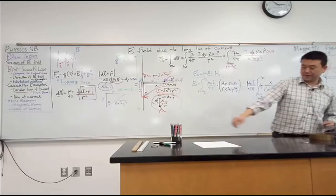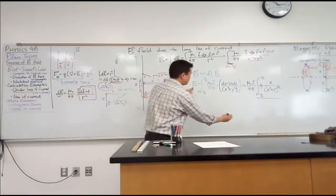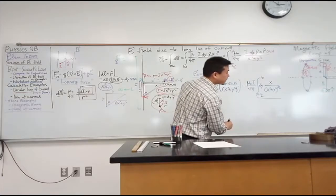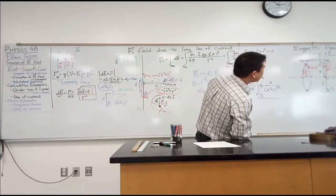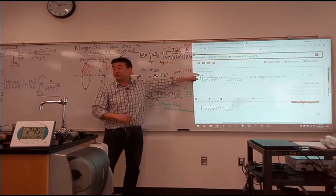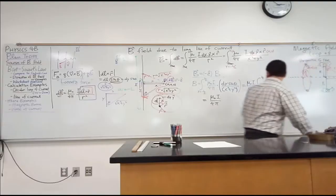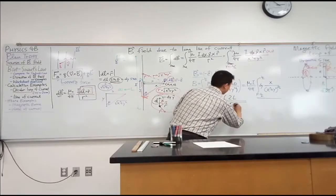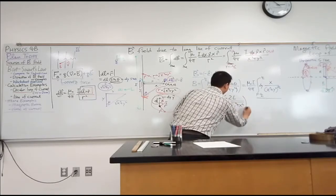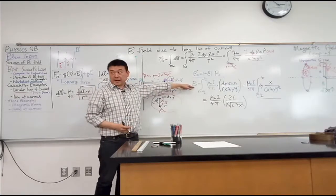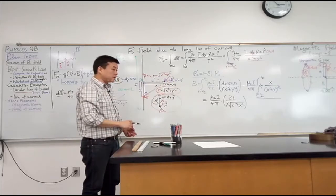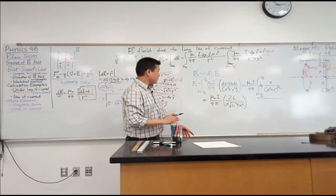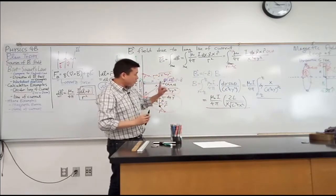This is my antiderivative - wait, it's not just antiderivative, it plugged in these limits of integration already. So B is equal to mu naught I over 4 pi times 2L over X square root of L squared plus X squared. That's the expression for the magnitude of magnetic field pointing into the board.